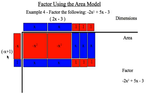That would make the right or left hand side dimension to be -x + 1. So my factor here of -2x² + 5x - 3 factors into these two binomials: (-x + 1) and (2x - 3).